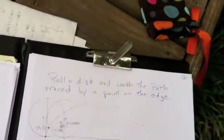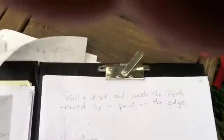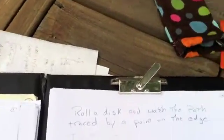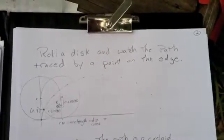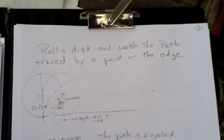A little more complicated parameterization I want to go over. Suppose the wind doesn't blow my paper away. I roll a disc and watch the path traced by a point on the edge of that disc.